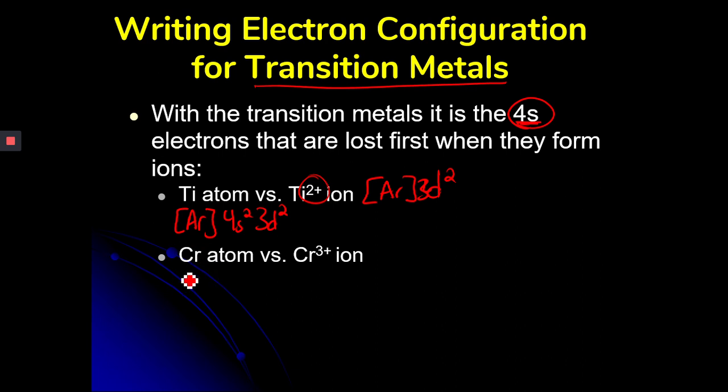So if we look at chromium, remember chromium would be argon, and then chromium is our exception, so it would be 4S1, 3D5. So to say that we have a chromium 3 ion, what we would do is we would lose the 4S, and then we would lose 2 from the 3D. So chromium plus 3 would be argon 3D3. So transition metals lose their S orbital electrons first, everybody else it's going to be the outermost electron.